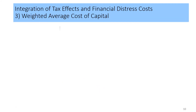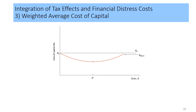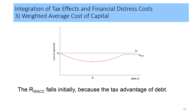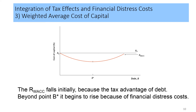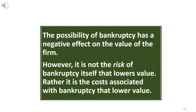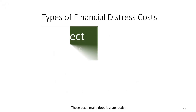What about the weighted average cost of capital? From the figure, the WACC is represented by the red line. The weighted average cost of capital falls initially because of the tax advantage of debt. Beyond point B*, the WACC begins to rise because of financial distress costs. There are three types of financial distress costs, and these costs make debt less attractive.